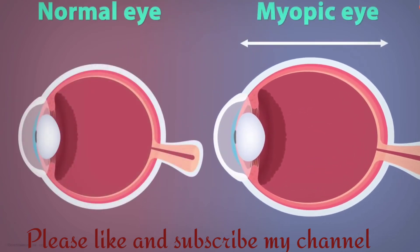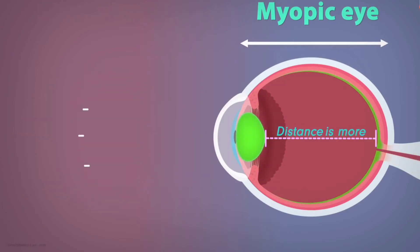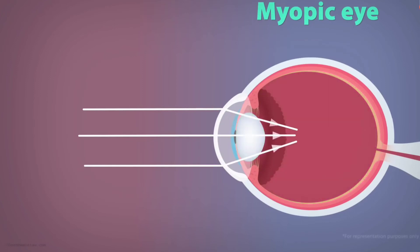A larger size of the eyeball is one reason for this defect. Due to the elongation of the eyeball, the distance between the lens and the retina is more than in the normal case, causing the image to form in front of the retina. Another reason may be that the lens is too curved.